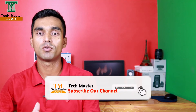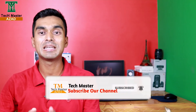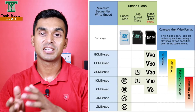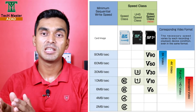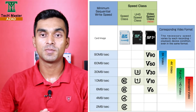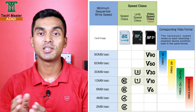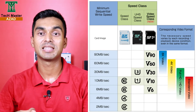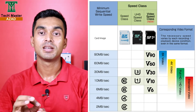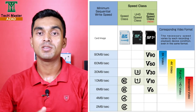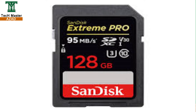For normal memory card use, Class 10 is recommended. For 2K and 4K video recording, you need a higher speed card. U1 speed mode should be at least a minimum write speed of 10 megabits per second. U2 takes you to 20 megabits per second, and U3 takes you to at least 30 megabits per second.